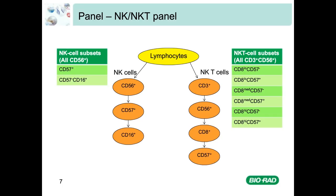Before diving directly into designing our panel, it's crucial to see in which fluorophores these markers are available. It is really frustrating to build a perfect theoretical panel only to find that some antibodies cannot be found conjugated with certain fluorophores. So always make it a habit to check which fluorophores you have at your disposal from the start. Keep in mind that if you do not find your favorite antibody conjugated to the fluorophore you need, there are several conjugation kits available: the ReadyLink antibody conjugation kits for small amounts, and the Lynx kits for larger amounts — both easy to use and resulting in conjugated antibodies in just over an hour.